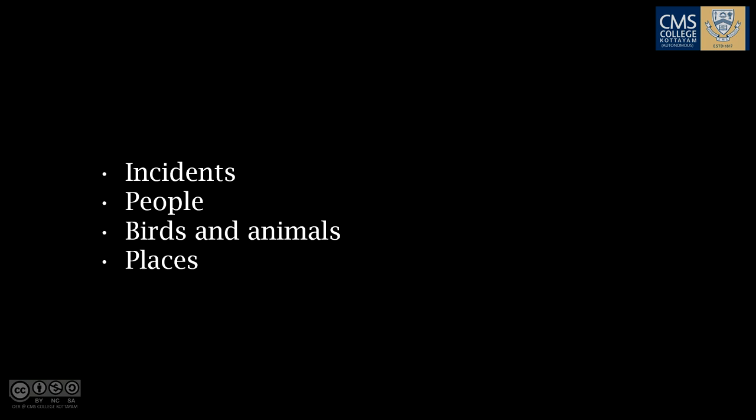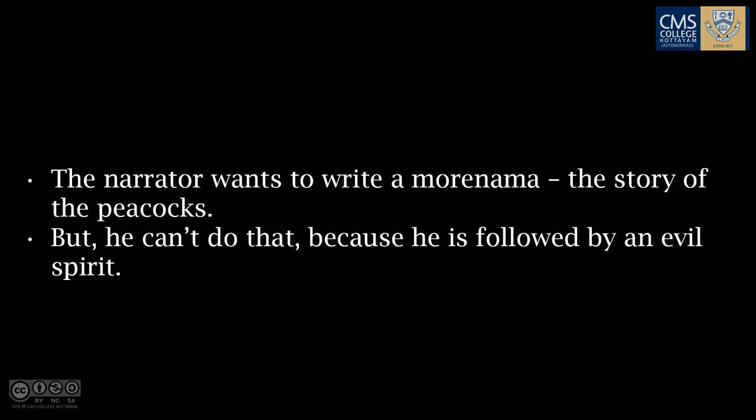Two ideas sum up the background of the story. One, the narrator wants to write a Mornama — the story of the peacocks. And secondly, he can't do that, because he is followed by an evil spirit. Now let us see an outline of the story, which we will sum up in 16 points.